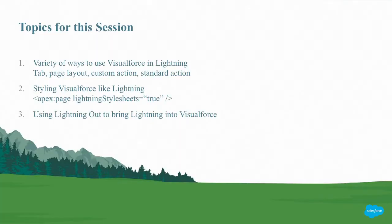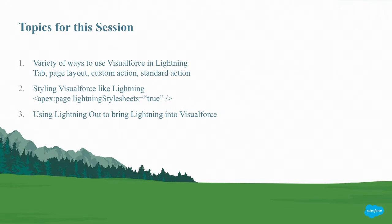I've got three topics for today's session. The first is the variety of ways that you can use Visualforce in Lightning today — tabs, page layouts, custom and standard actions. I'm going to be showing you a new beta feature called Lightning Style Sheets, an attribute you can add to your Visualforce pages to style them like Lightning. And I'll show you how to bring Lightning into Visualforce using Lightning Out and the apex:includeLightning component.